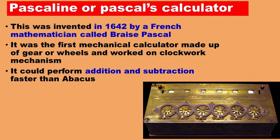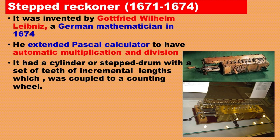Pascaline or Pascal's Calculator. This was invented in 1642 by a French mathematician called Blaise Pascal. It was the first mechanical calculator made up of gears or wheels and worked on a clockwork mechanism. It could perform addition and subtraction faster than the Abacus.